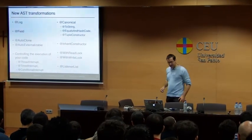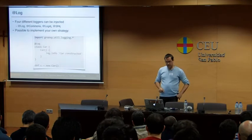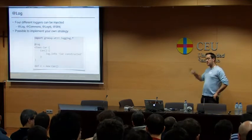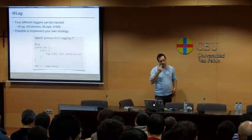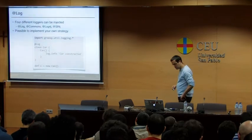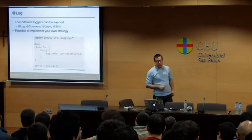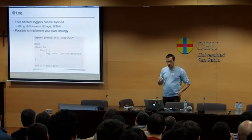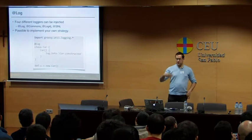We have many new AST transformations. First, the @Log transform provides injection of a logger in your classes. There are different implementations: @Log uses java.util.logging, and there's Commons Logging, Log4j, and SLF4J support. When you annotate a class with @Log, it creates a new logger instance in your class transparently so you don't have to do it yourself. Then you can call log.info, log.debug, and so on.